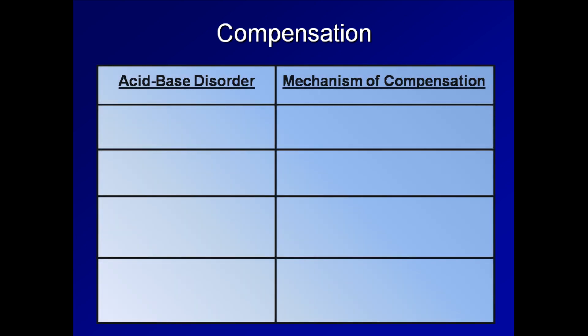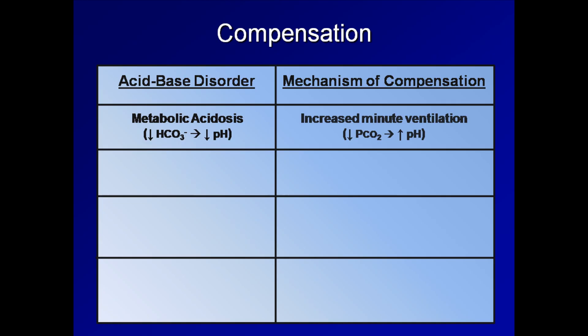Let's take a quick look at the basic mechanisms of compensation for the four general types of acid-base disorders. In a metabolic acidosis, the serum bicarb is abnormally low, and thus so is the pH. The body's respiratory compensation is to increase minute ventilation. Increasing minute ventilation lowers pCO2 and thus tries to increase pH back closer to normal.